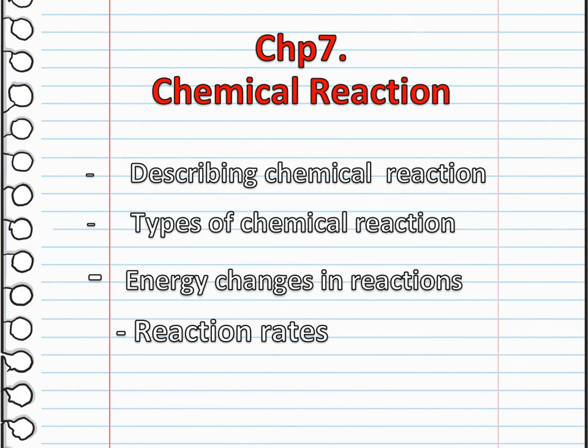We are going to talk about types of chemical reactions: combustion, decomposition, neutralization, redox, and precipitation. Each one has its own characteristics, its own way of happening, and its own properties. We are also going to talk about energy changes in reactions — we have exothermic reactions and endothermic reactions, and we will understand the differences between these. We're also going to talk about reaction rates and the factors that affect whether a reaction is fast or slow.